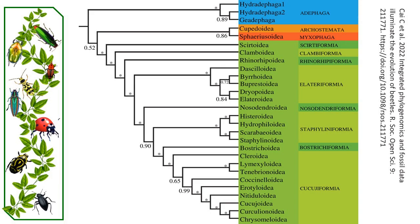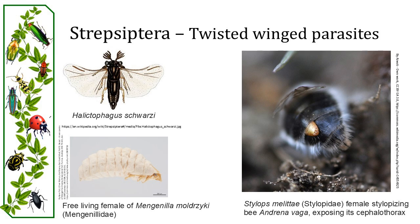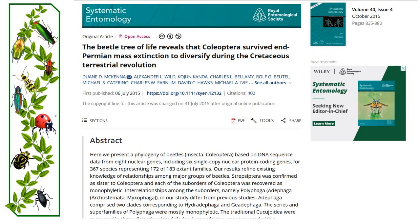Beetle morphology, particularly the elytra, suggests Coleoptera is a monophyletic group through the arrangement of its suborders Adephaga, Archostemata, Myxophaga and Polyphaga, though this has been debated. Strepsiptera, the twisted-winged parasites, are considered a sister group to beetles, supposedly diverging in the early Permian. Molecular phylogenetic analysis supports the monophyly of Coleoptera. In 2015, research published by a group of scientists led by Dr. McKenna analyzed 8 nuclear genes from 367 species across 127 Coleopteran families and suggested multiple changes.